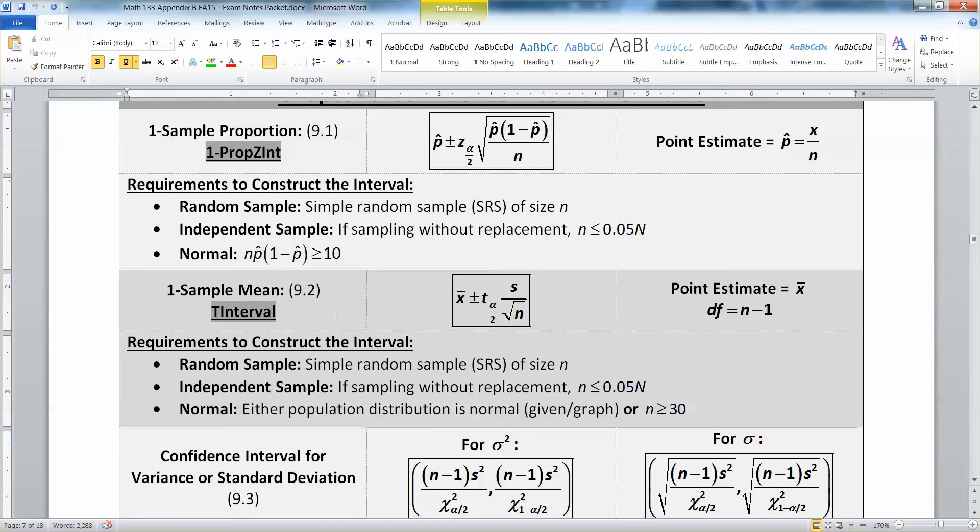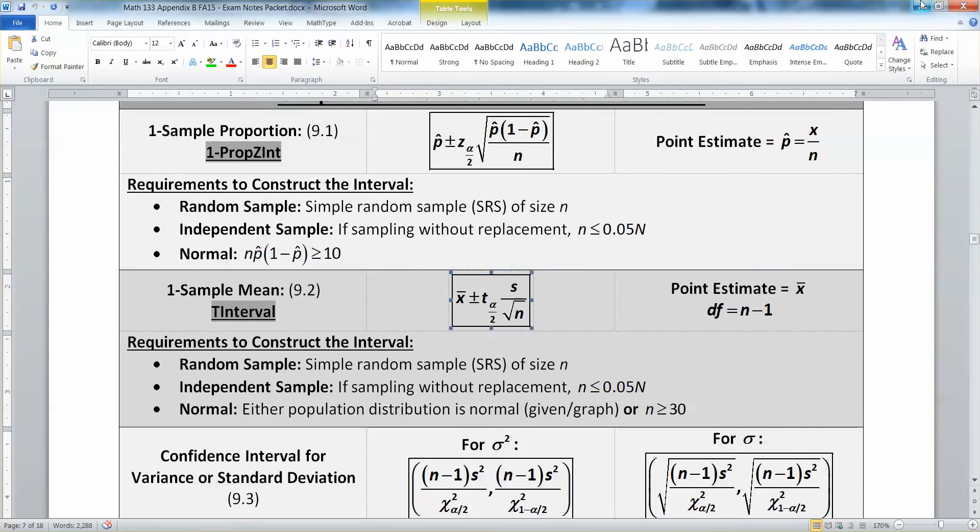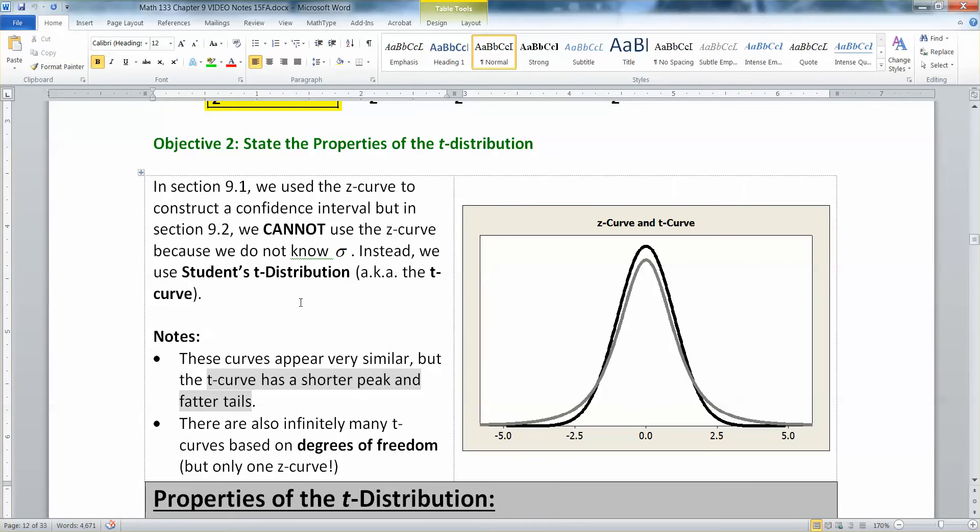So if that's the case, we're going to be stuck using this worse curve called the T curve. That's why it's called a T interval. And that's why in here you see T alpha over 2.